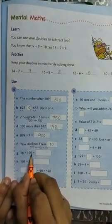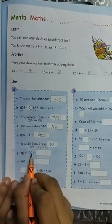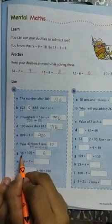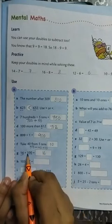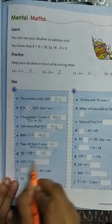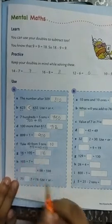Next question, 16 plus 100. Look at the ones place, 6 plus 0 is 6. Tens place, 1 plus 0 is 1. And here 1 is there in the hundreds place. So answer is 116. 16 plus 100 is 116.